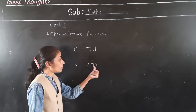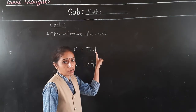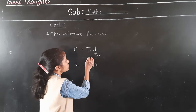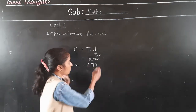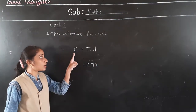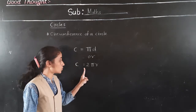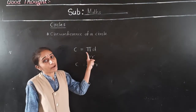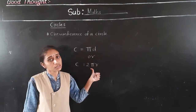The circumference of a circle is also equal to 2πR. Why? Because diameter means twice the radius — diameter is 2 times R. So π D becomes π into 2R, which is 2πR. If diameter is given, use C = πD; if radius is given, use C = 2πR.